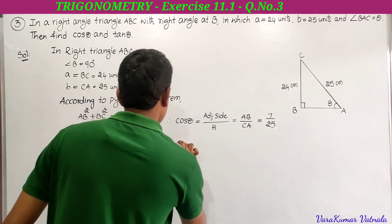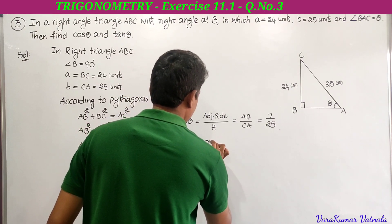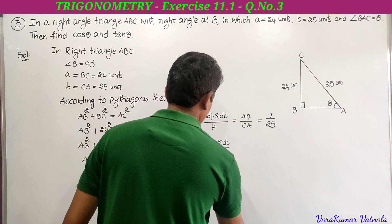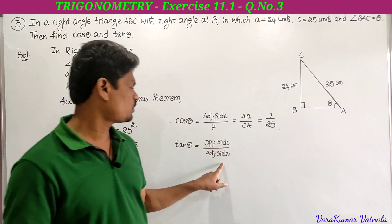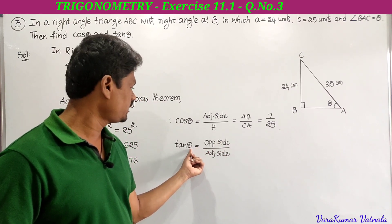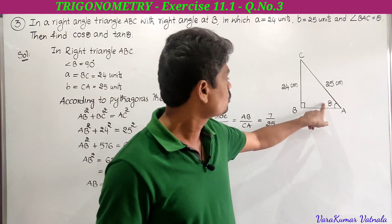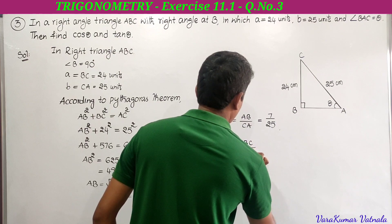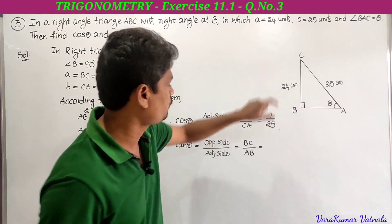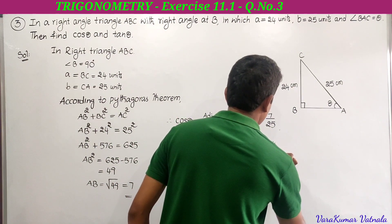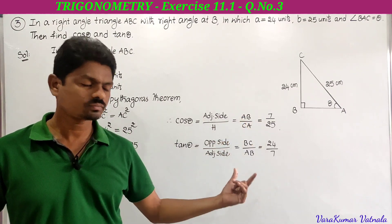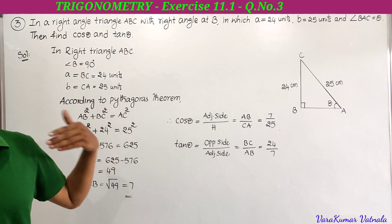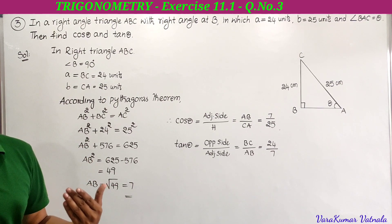Tan θ equals opposite side divided by adjacent side. For angle θ, the opposite side is BC and the adjacent side is AB. So tan θ equals BC by AB — that is 24 divided by 7. Tan θ equals 24 by 7. So cos θ equals 7 by 25 and tan θ equals 24 by 7. This is the third problem in Exercise 11.1. That's all for today's class; we will meet in the next class with another problem. Thanks for watching.